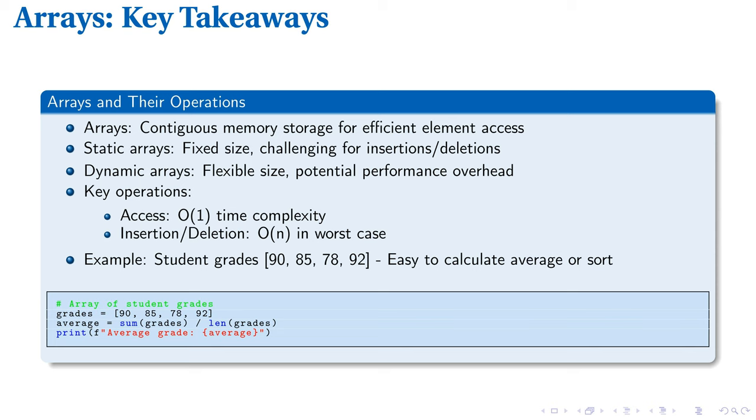The example 90, 85, 78, 92 illustrates how arrays facilitate easy calculations, such as computing average grades. The Python code demonstrates this practicality, creating an array of grades and efficiently calculating the average.